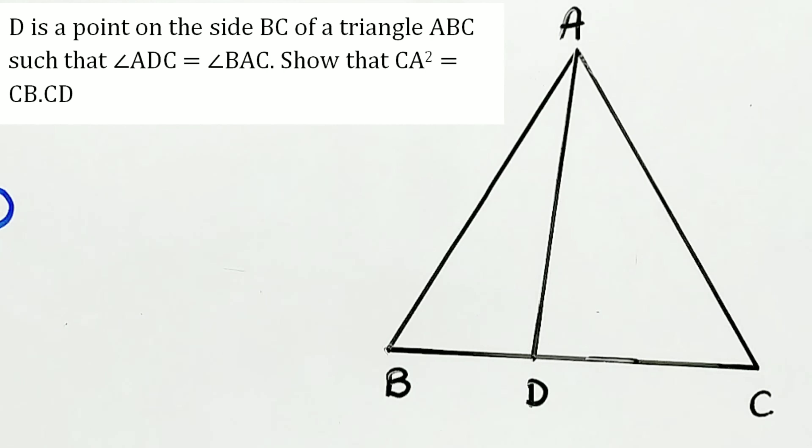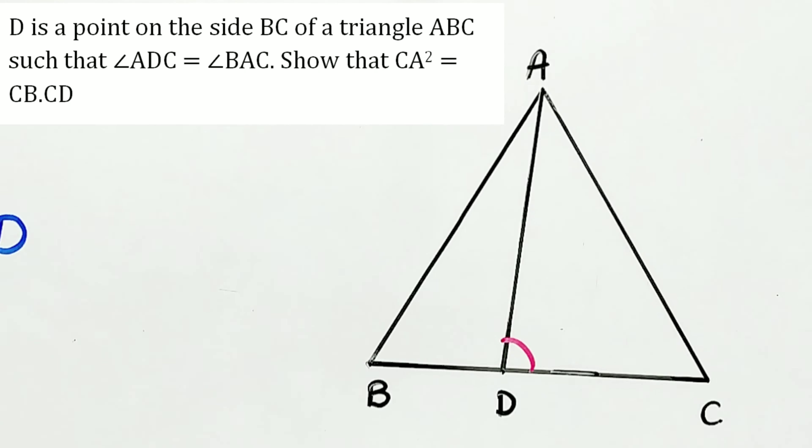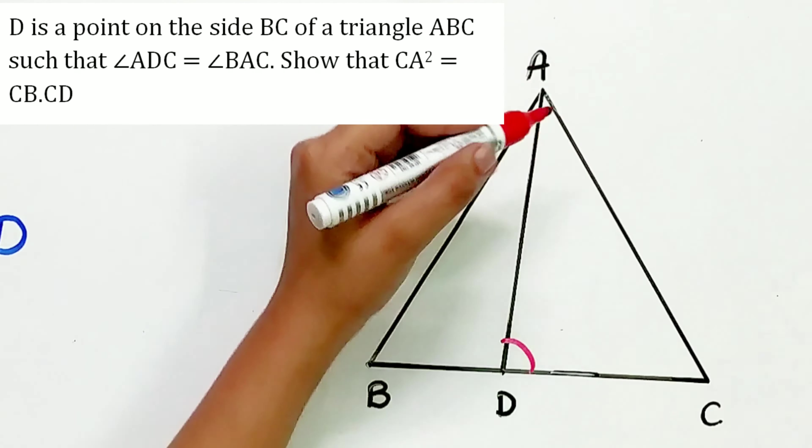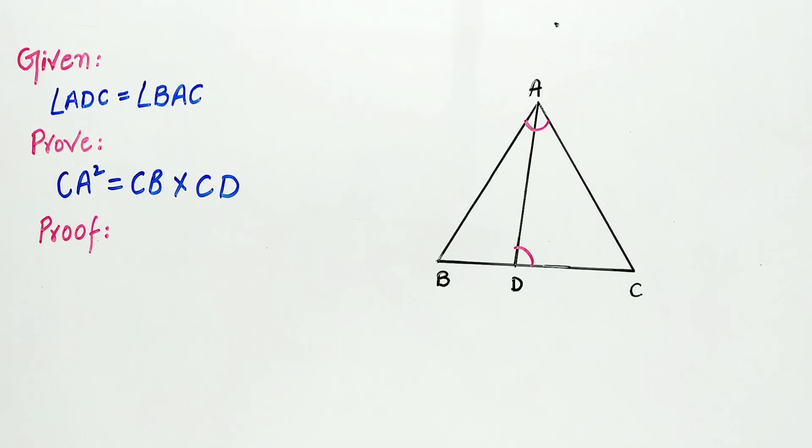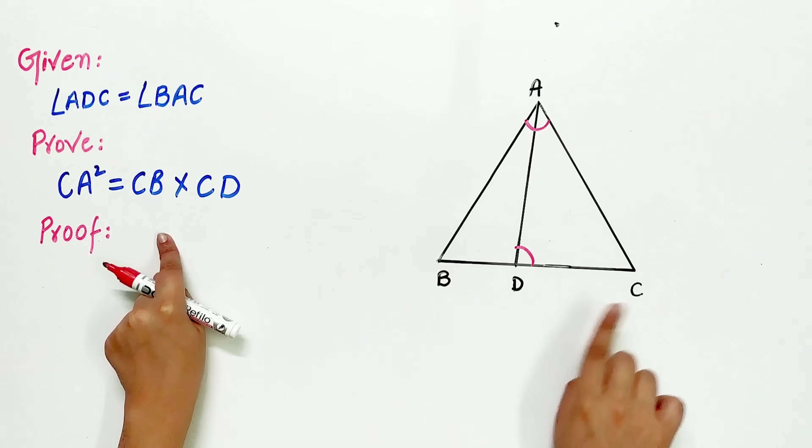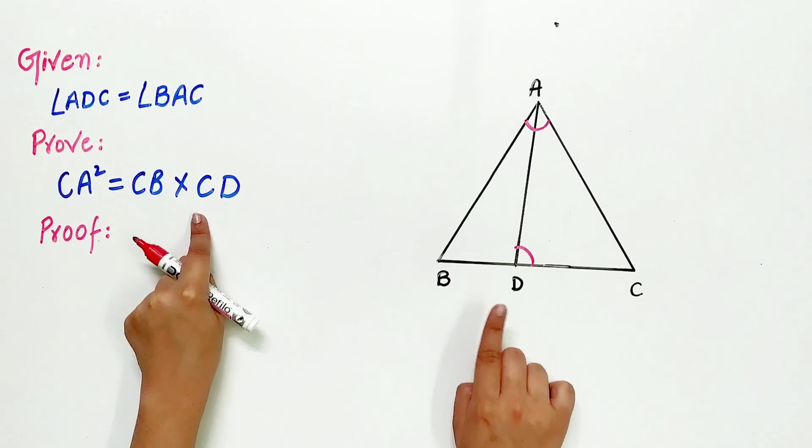D is a point on the side BC of a triangle ABC such that angle ADC is equal to angle BAC. We have to show that CA square is equal to CB multiply CD.